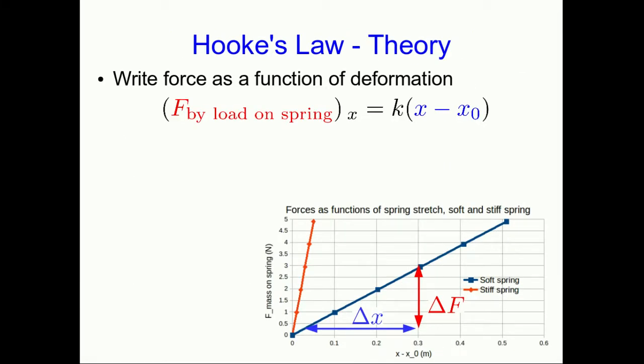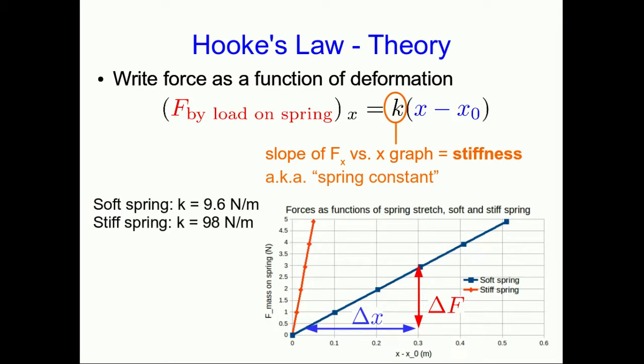And now we calculate the slopes, and they come out like this. Now we can write the force as a function of the amount of deformation. And because the data shows us this is a linear relationship, that's a very easy function to write down. The force is just some constant times the displacement of the end. And that constant is just the slope of our Fx versus x graph. And we'll call that the stiffness of the spring. You'll often see it called the spring constant, but I prefer to call it the stiffness, because that's more descriptive of what it means. And so we see that our stiffer spring has come out with a higher stiffness than our soft spring. That makes sense, and that's part of why we put the force on the vertical axis.